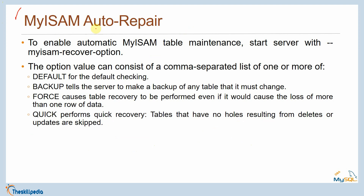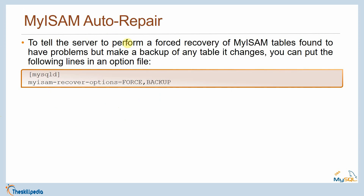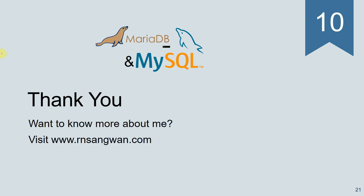To enable automatic MyISAM table maintenance, start the server with the --myisam-recover option. The option value can be a comma-separated list of one or more of: DEFAULT for default checking, BACKUP to tell the server to make a backup of any table it must change, FORCE to cause recovery even if it would cause the loss of one or more rows of data, and QUICK to perform quick recovery skipping tables with no holes from deletes or updates. To perform force recovery with backup, add these lines to the options file: myisam_recover_options=FORCE,BACKUP. That's all for the session — thank you very much.